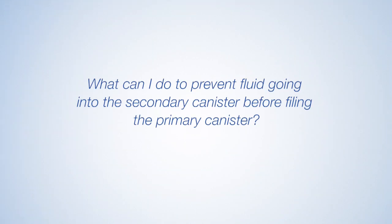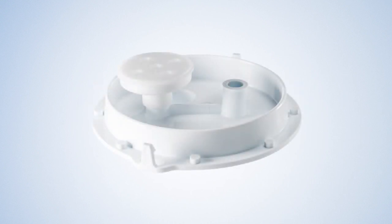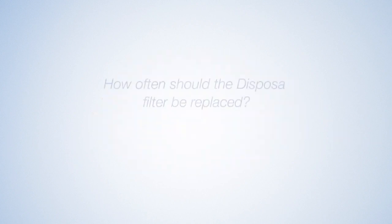What can I do to prevent fluid going into the secondary canister before filling the primary canister? To prevent the secondary canister from filling prematurely, an aspiration filter can be attached to the underside of the pump port on the primary collection canister lid.